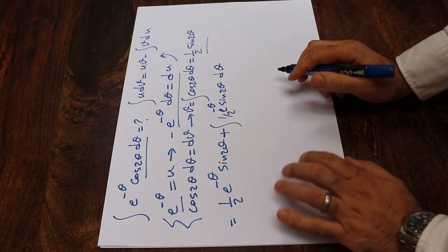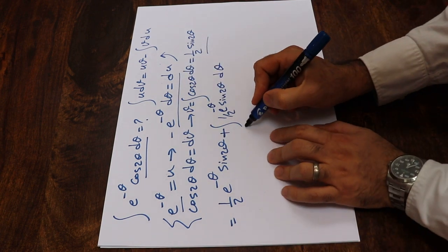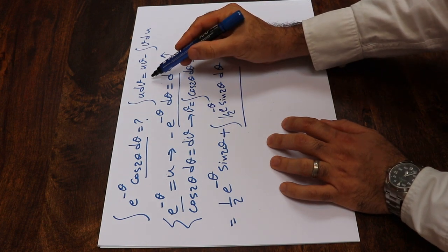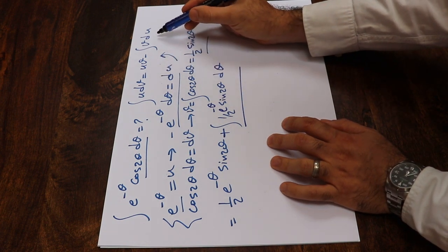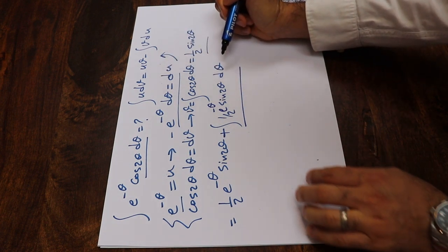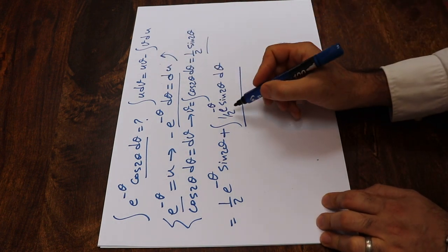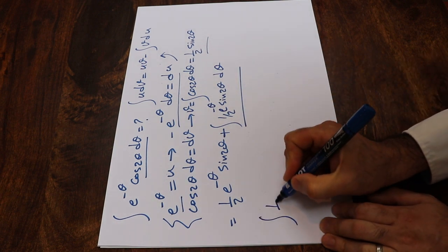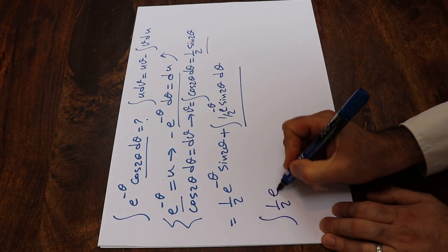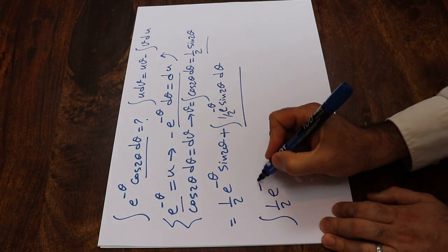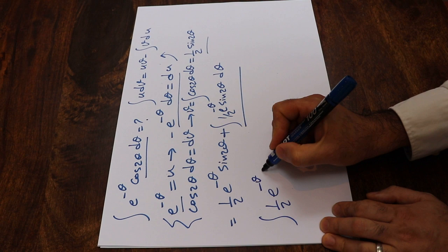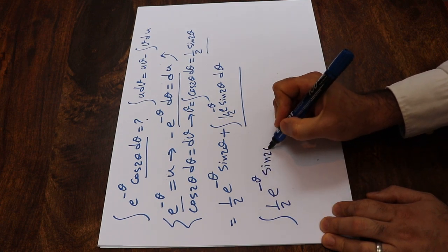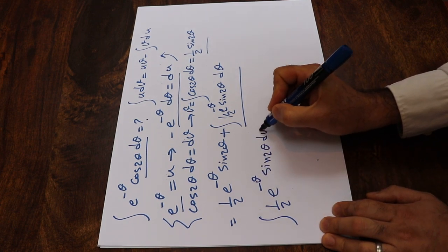To solve this remaining integral, you need to apply the integration by parts formula one more time. So let's calculate the integral of 1 divided by 2 times e to the power of minus theta times sine 2 theta d theta.